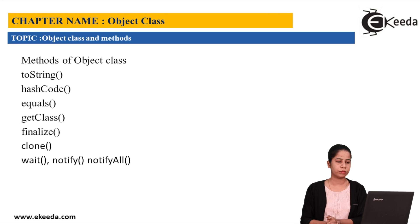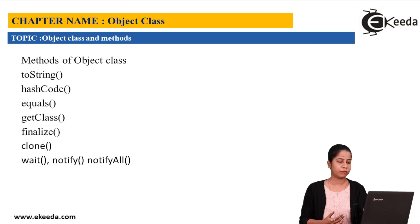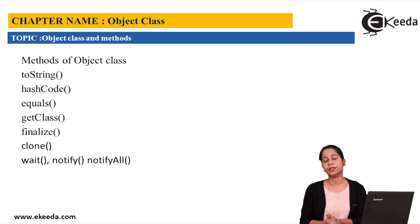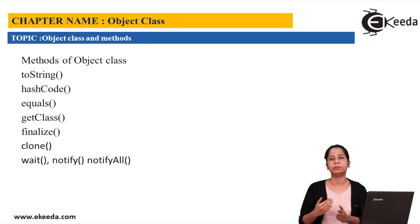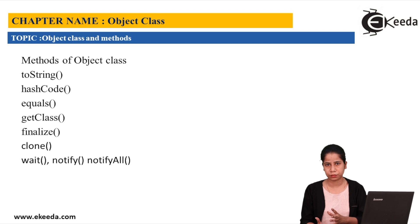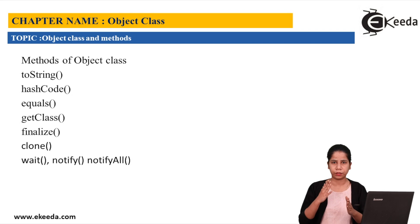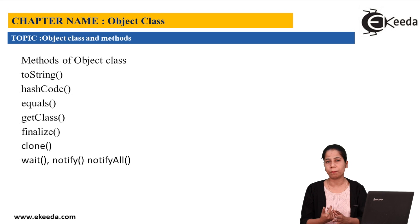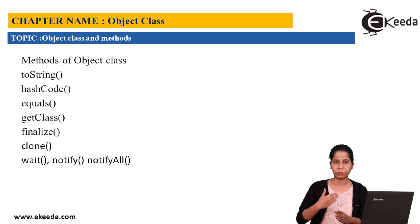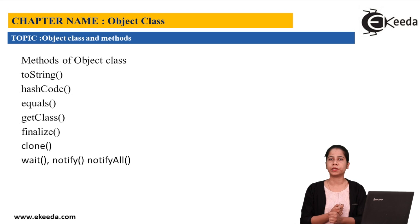Then we have wait(), notify(), and notifyAll(). These methods are extensively used for inter-thread communication. What is a thread? We will be learning this in the multi-threading chapter, where there is one topic called inter-communication between threads, and in that we are going to make use of wait(), notify(), and notifyAll().